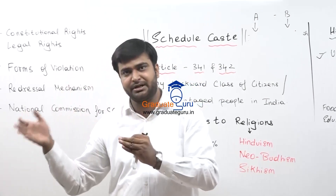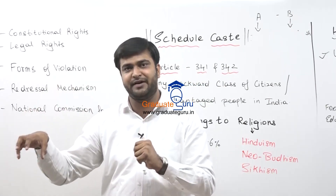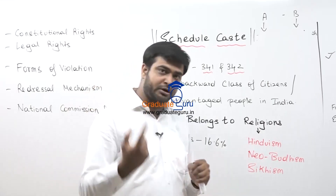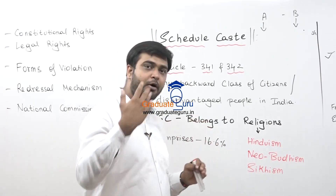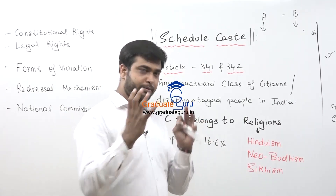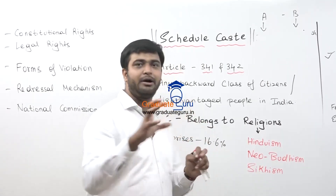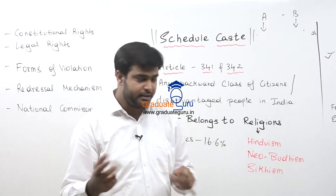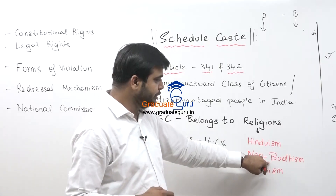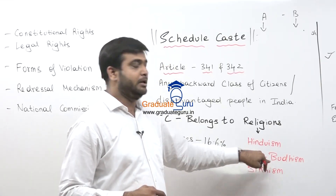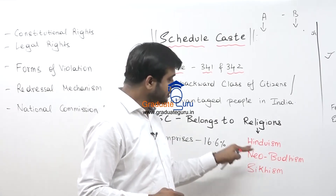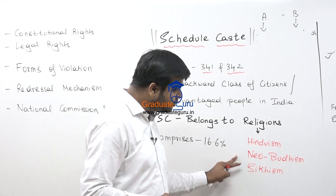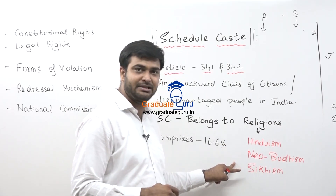Dr. Baba Sahib Ambedkar found a new form of Buddhism, because Buddhism itself has certain sub-castes within it. He formed a new form of Buddhism called Navayana, and that is Neo-Buddhism. So the three religions are Hinduism, Neo-Buddhism, and Sikhism.